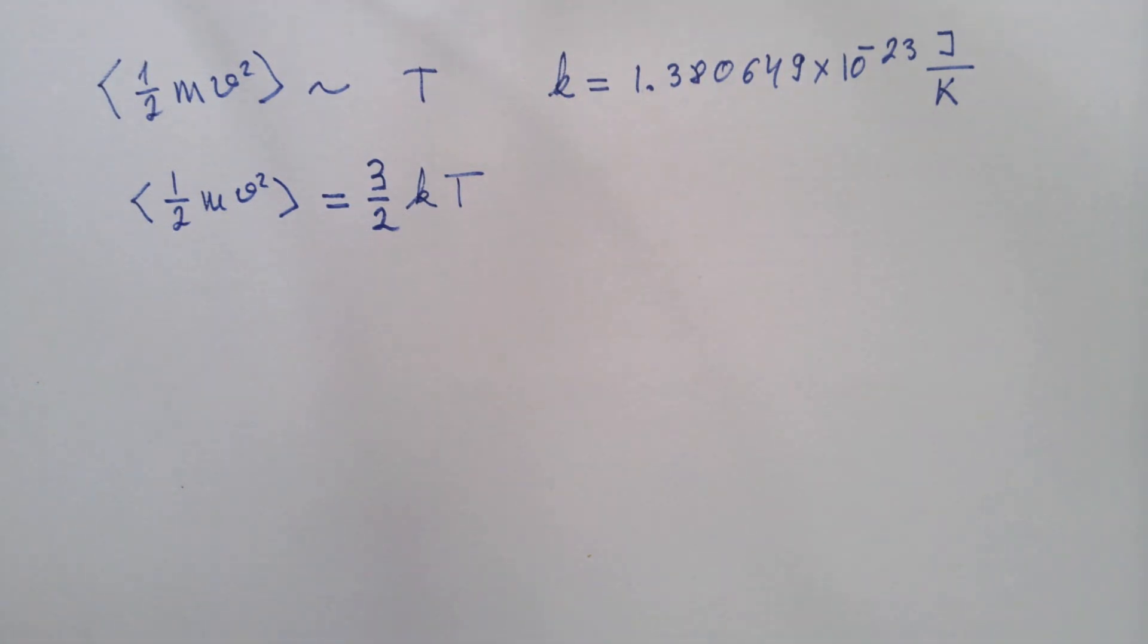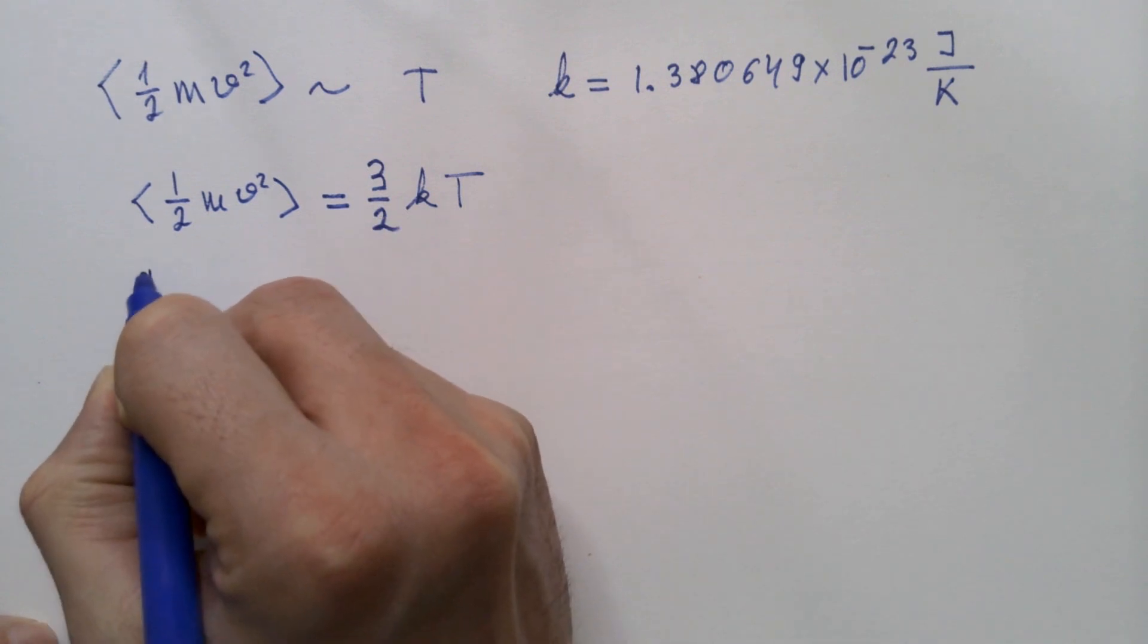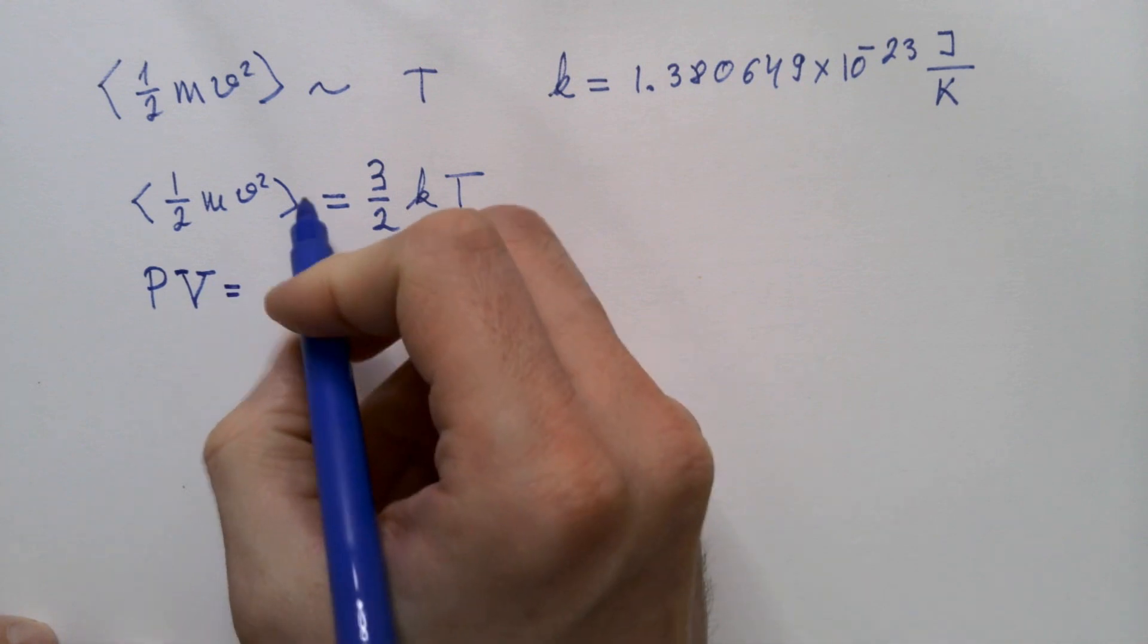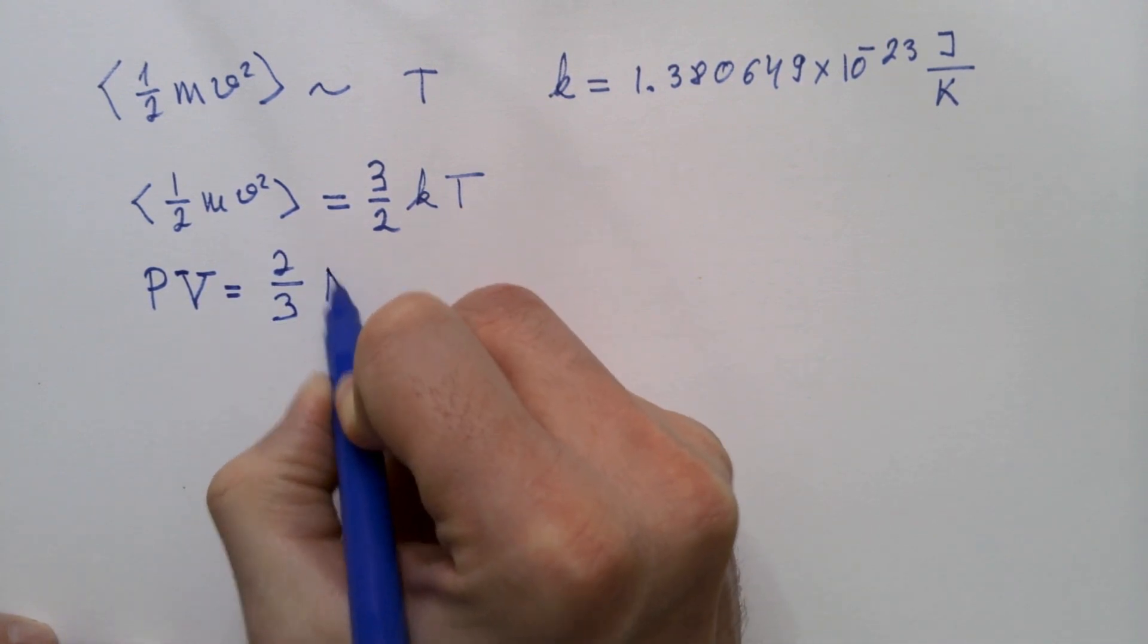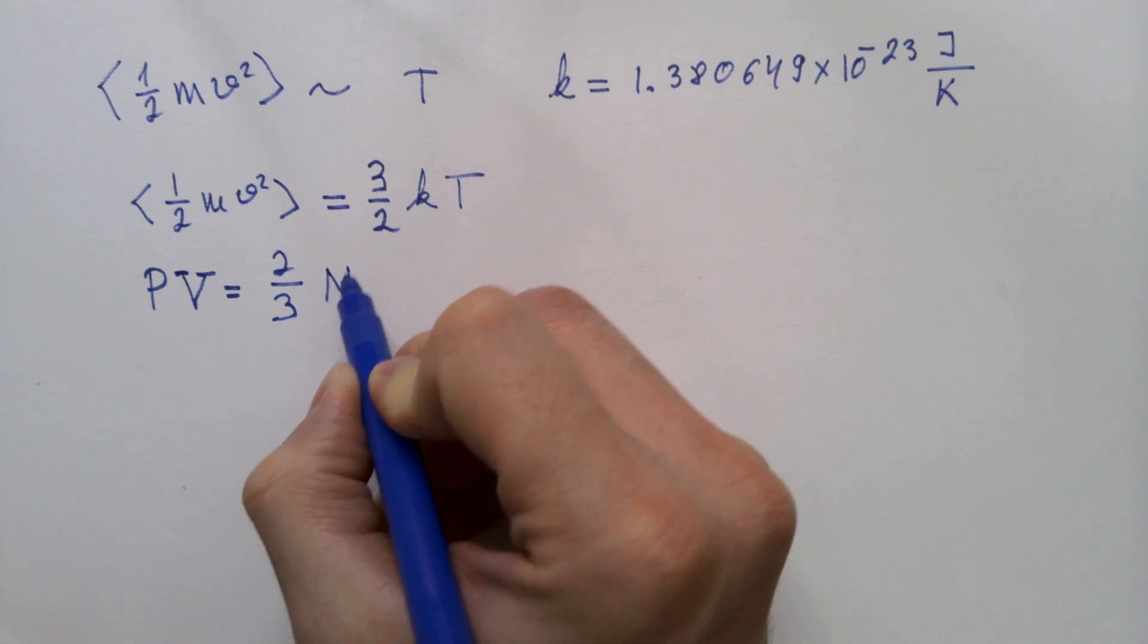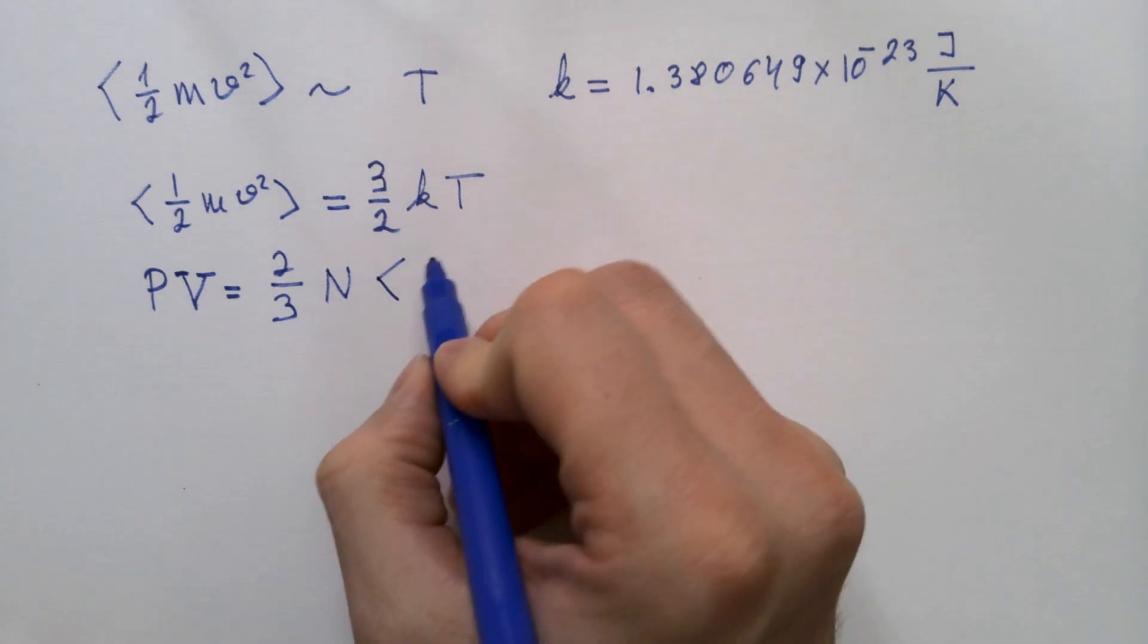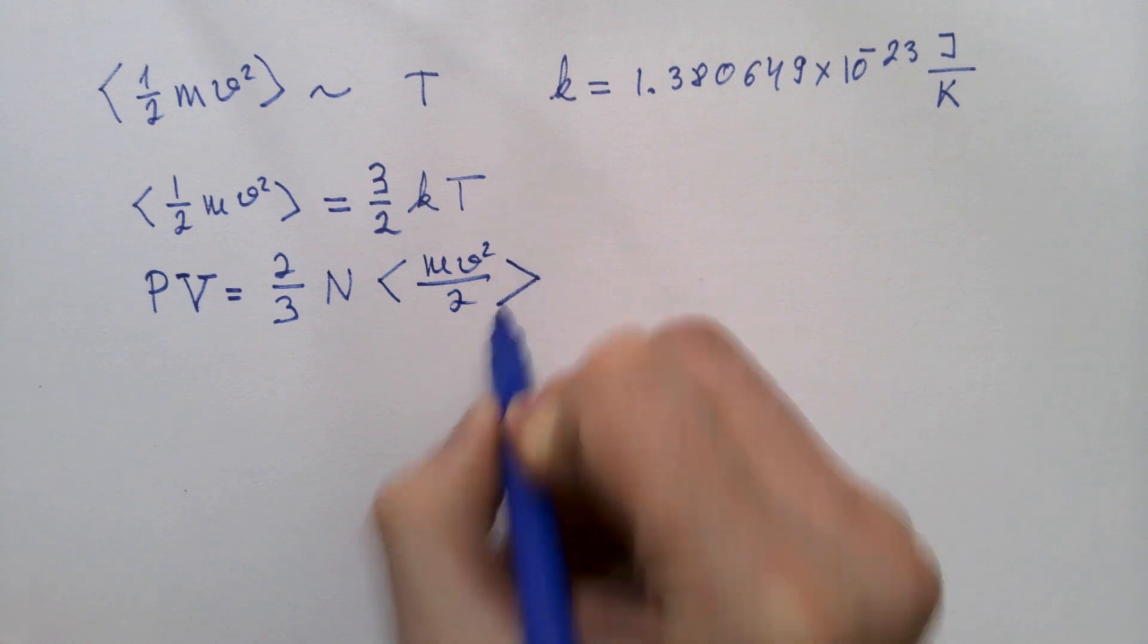Recall from my video on pressure of a gas that we had that pressure times volume is equal 2 over 3 times n, where n is number of atoms or molecules in this volume V, times the average kinetic energy of the gas, again.